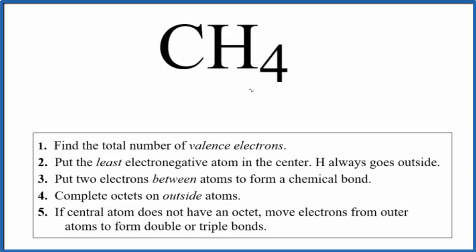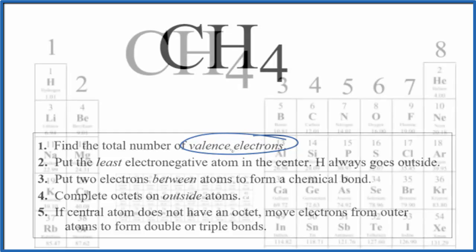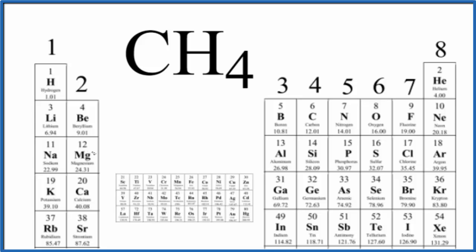When we write the Lewis structure for a compound like methane, the first thing we do is find the number of valence electrons. We can use the periodic table to help us with that. The periodic table, each group has the number of valence electrons listed at the top.